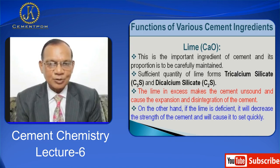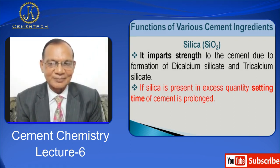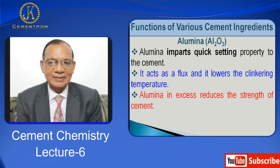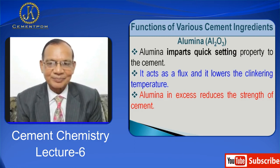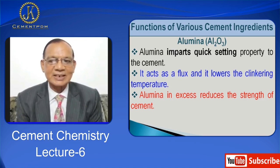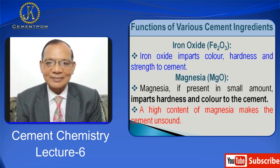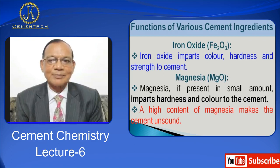Lime in excess makes the cement unsound and causes expansion and disintegration of cement. On the other hand, if lime is deficient it will decrease the strength of the cement and cause it to set quickly. Now silica imparts strength to the cement due to formation of dicalcium silicate and tricalcium silicate. If silica is present in excess quantity, the setting time of cement is long. Alumina Al2O3 imparts quick setting property to cement; it acts as a flux and lowers the clinkering temperature. Alumina in excess reduces the strength of cement.